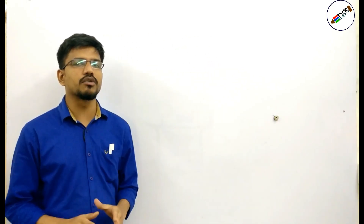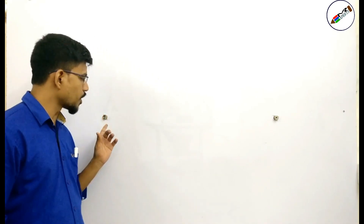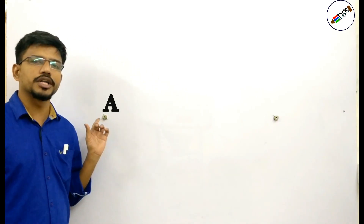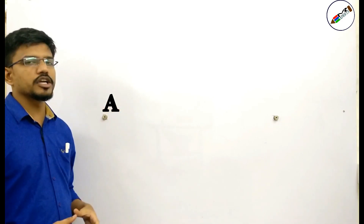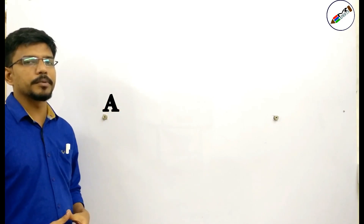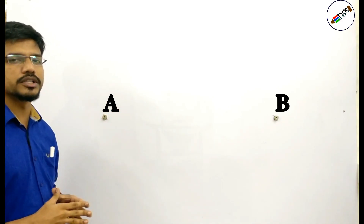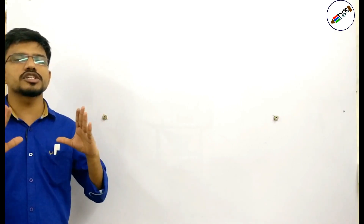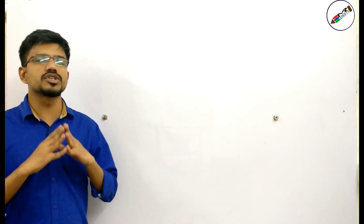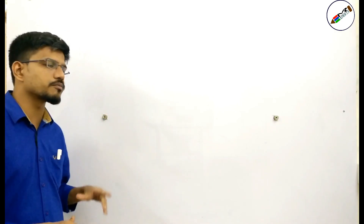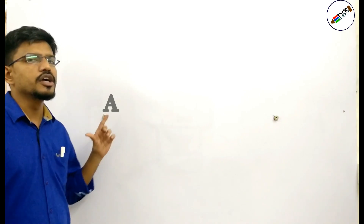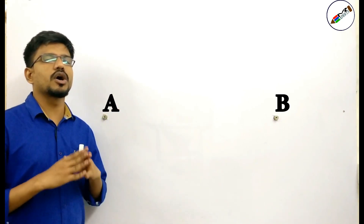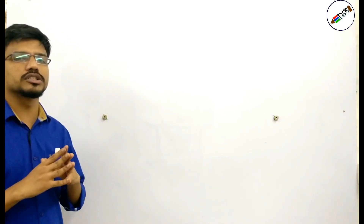We have on our board right now 2 fixed points. Let this first point be point A and the other point be point B. These are our 2 fixed points. Now we have to find out all such points whose sum of the distances from point A and point B is always a constant.